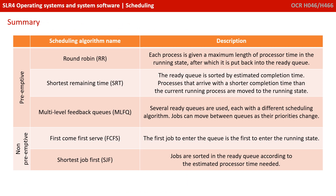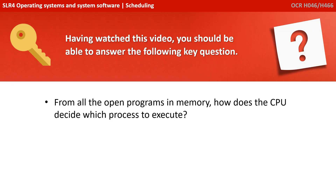As a summary, we've listed here the five scheduling algorithms you need to be aware of for the exam, giving a brief description and stating whether they're pre-emptive or non-pre-emptive. This might be a good point to pause the video and take some notes. Having watched this video, you should be able to answer the following key question: from all the open programs in memory, how does the CPU decide which process to execute?